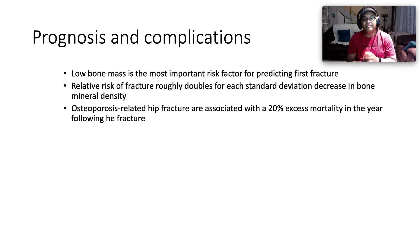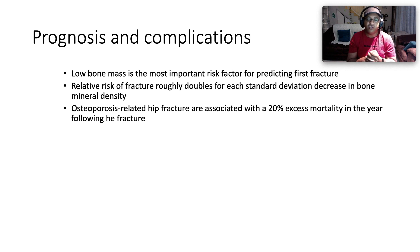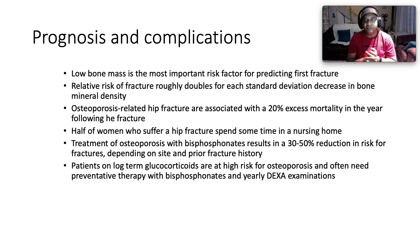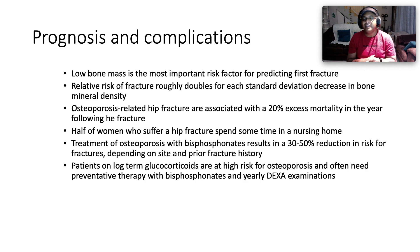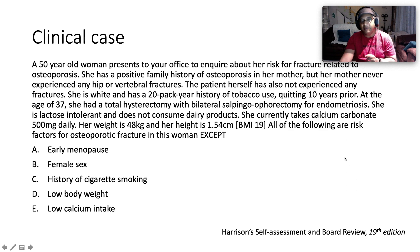Regarding prognosis and complications: low bone mass is the most important risk factor for predicting first fracture; relative risk of fracture roughly doubles with each standard deviation decrease in BMD. Osteoporosis-related hip fracture is associated with 20 percent excess mortality in the year following fracture. Half of women who suffer a hip fracture spend some time in a nursing home. Treatment with bisphosphonates results in a 30 to 50 percent reduction in risk for fractures depending on site and prior fracture history. Patients on long-term glucocorticoids are at higher risk and often need prevention therapy with bisphosphonates and yearly DEXA scans.